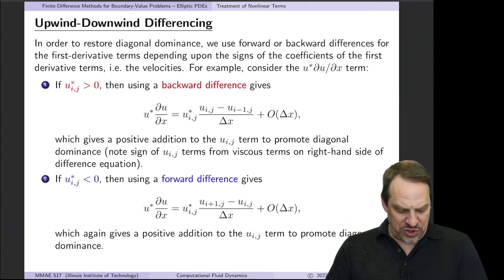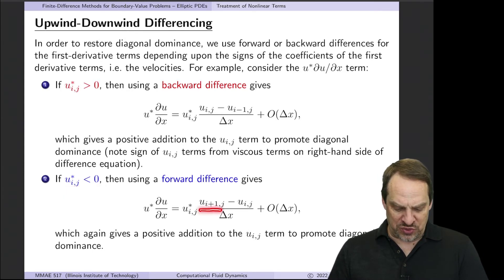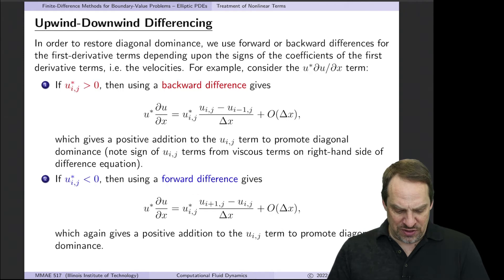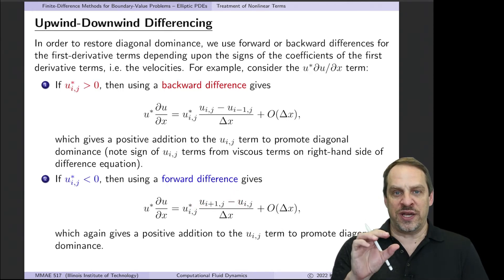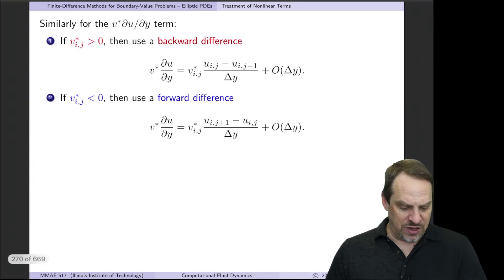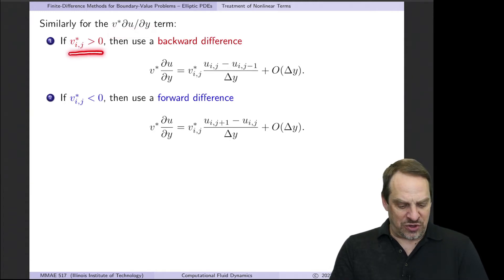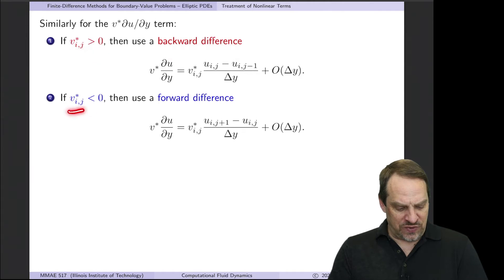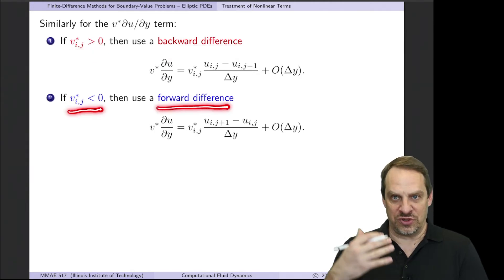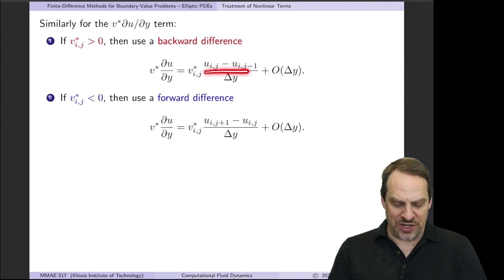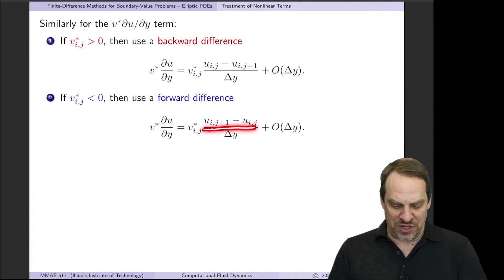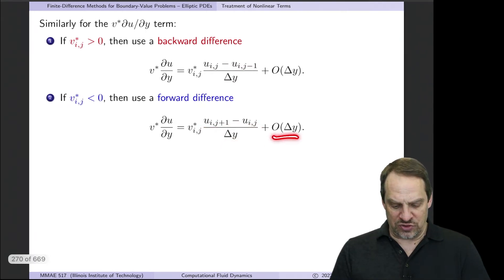When U_ij* is negative, we use a forward difference: (U_{i+1,j} - U_{i,j}) / Δx, still first-order accurate, again giving equal contributions to diagonal and off-diagonal. We do the same for the V terms: V* times ∂U/∂Y — if V* is positive, use a backward difference (U_{i,j} - U_{i,j-1}) / Δy; if V* is negative, use a forward difference (U_{i,j+1} - U_{i,j}) / Δy.